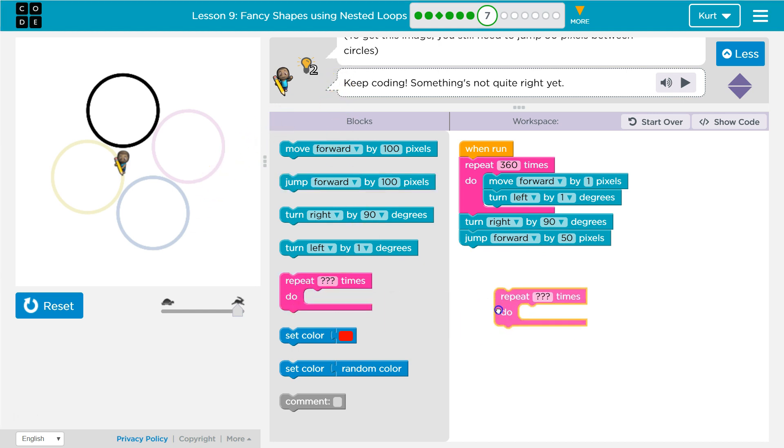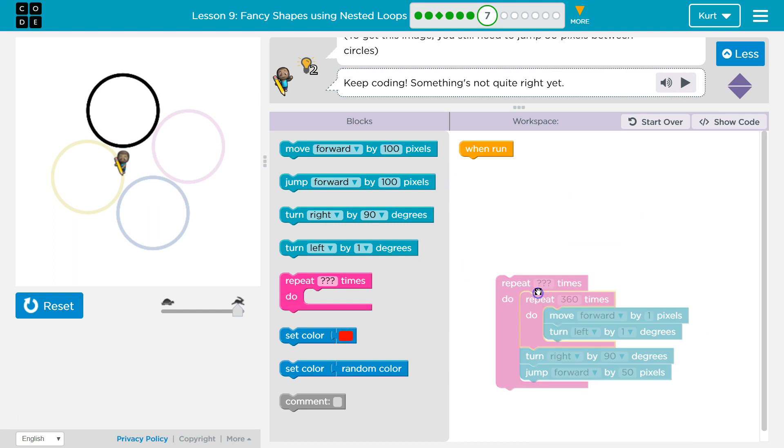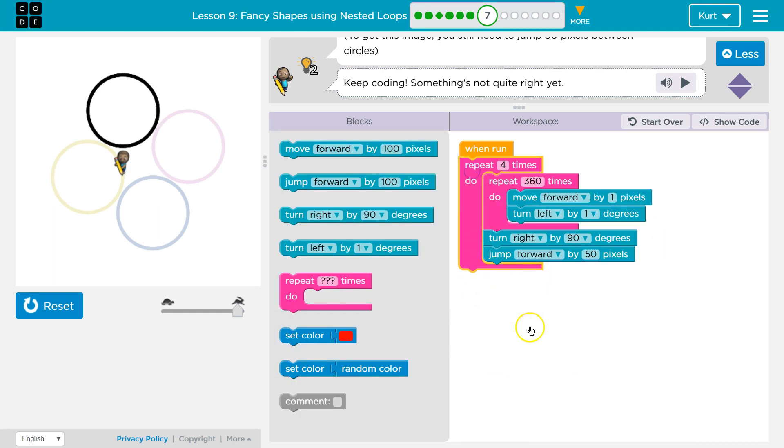So what we can do now is put all of this in another repeat. I'm going to switch this to the number four, and drag all of this up. What this code would do now is the computer's going to run it. It goes, okay, I need to run all the code inside of this four times, and it drops down and starts working on it. Oh, I need to run this part of the code 360 times. Okay, move forward one pixel, turn left one degree. Move forward one pixel, left one degree. 360 times, so we would draw a circle.